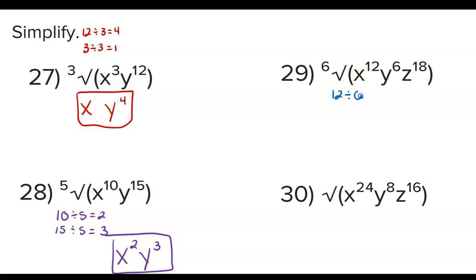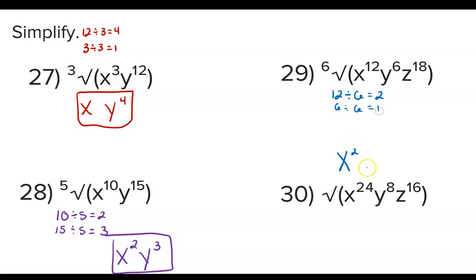Problem 29: the index is 6. 12 divided by 6 is 2, so we'll have x squared. 6 divided by 6 is 1, so we'll have y to the power of 1 — you don't need to write the positive 1. And 18 divided by 6 is 3, so z to the power of 3. The answer is x²yz³.